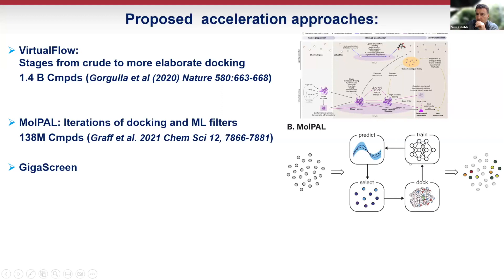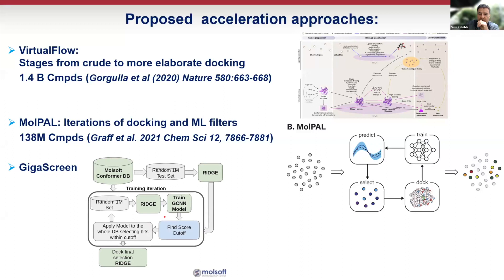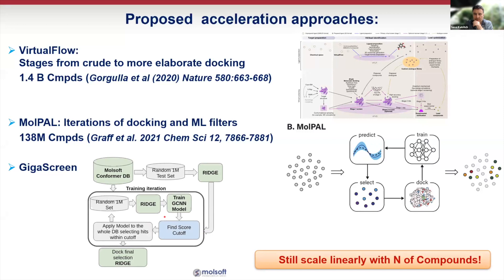The next idea was to combine docking with neural network learning: iterating between docking a subset of the library and training based on this subset, applying this to the whole library, and iteratively narrowing down the number of compounds. The GigaScreen approach just presented by Eugene does this even more effectively. However, you still have to enumerate the library to generate conformers, and it scales linearly with the number of compounds.